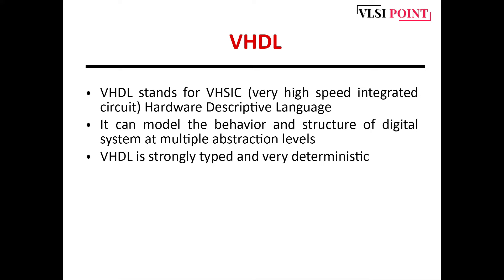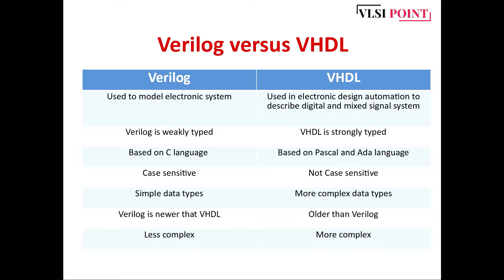Comparing Verilog and VHDL: Verilog is used to model electronic systems, while VHDL is used in electronic design automation to describe digital and mixed signal systems. Verilog is weakly typed; VHDL is strongly typed, meaning VHDL is more strict about syntax. Verilog is based on C language with similar syntax, while VHDL is based on Pascal and Ada language.